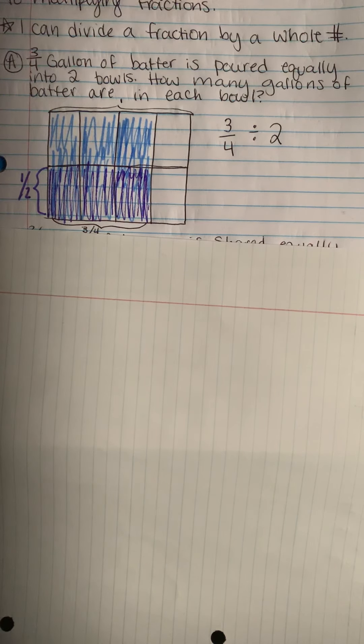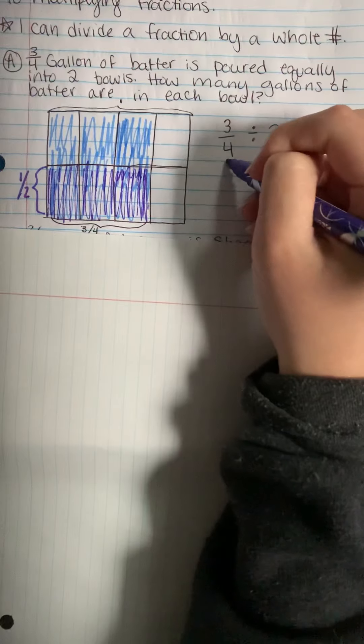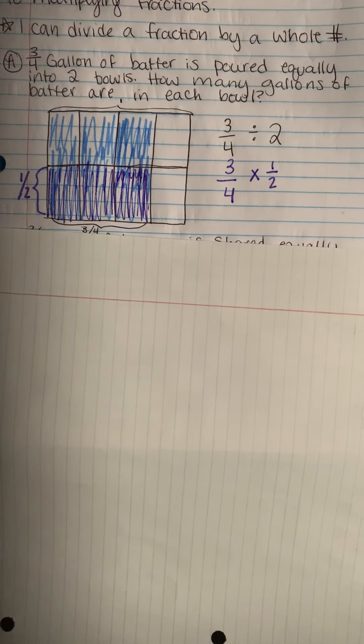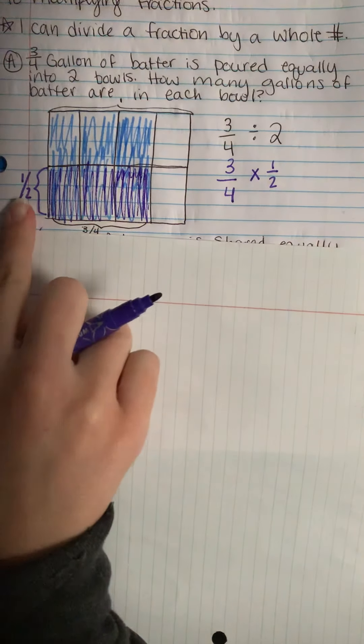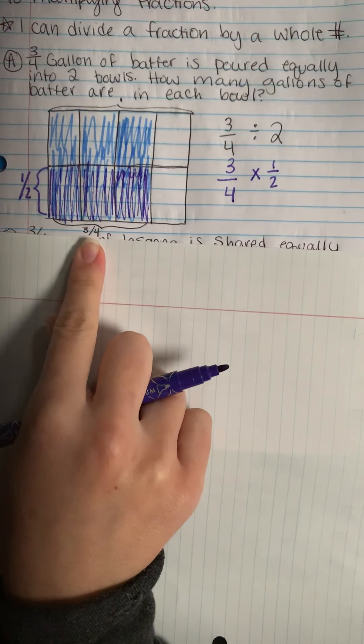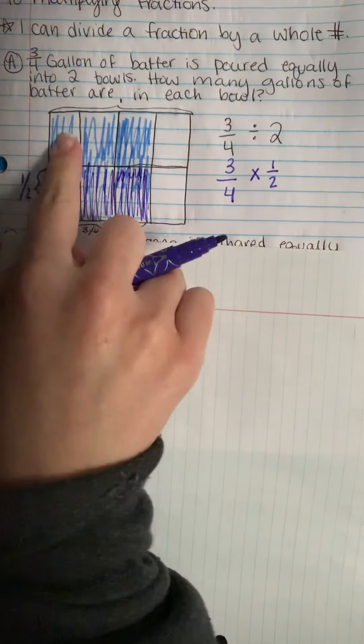And I didn't shade over here because that would be extra for a batter that I'm not using. We could also say that our model shows half of three-fourths because dividing by two and multiplying by one half are the same like we learned in keep change flip. We labeled our model to show one half in three-fourths.